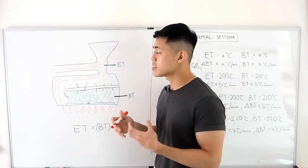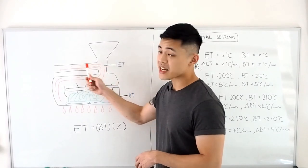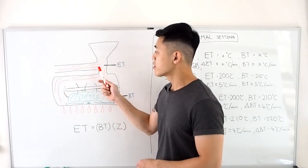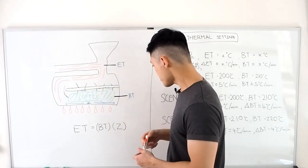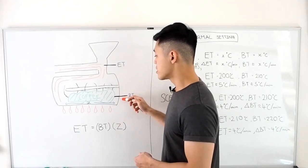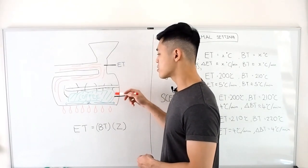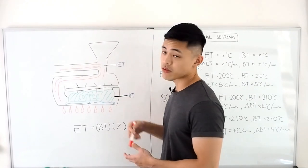The first one is represented by this probe at the exit chamber here, which we measure the ET or short for environment temperature. This is the temperature of the hot air exiting the roaster through the exhaust chamber here.